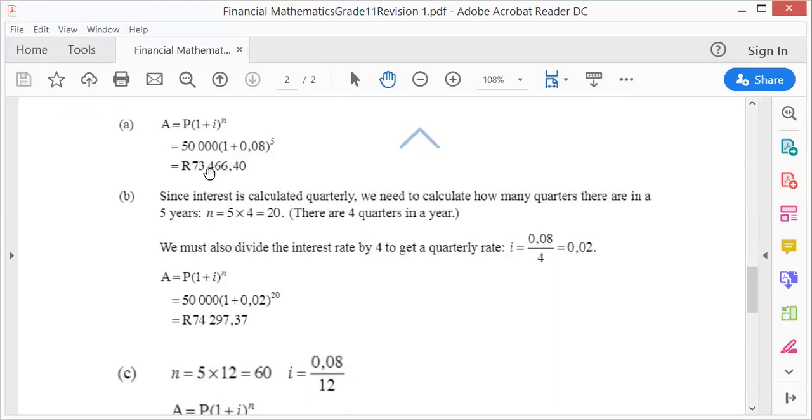However, if it becomes quarterly, remember there are 4 quarters in a year, so that 8% must be shared over 4 quarters. That's why 0.08 must be divided by 4, and the 5 years becomes 5 × 4. You increase the time, so 5 × 4.